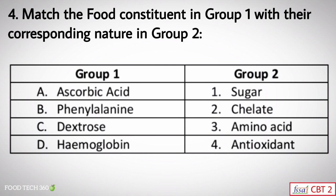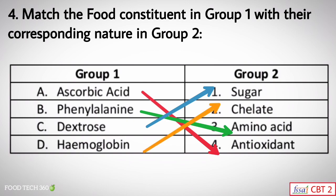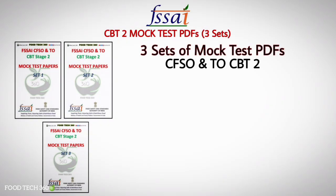Question number four: Match the food constituent in Group 1 with their corresponding nature in Group 2. Group 1 contains: ascorbic acid, phenylalanine, dextrose, and hemoglobin. Group 2 corresponding natures are: sugar, chelate, amino acid, and antioxidant. Ascorbic acid is an antioxidant, phenylalanine is an amino acid, dextrose is a sugar, and hemoglobin is a chelate.